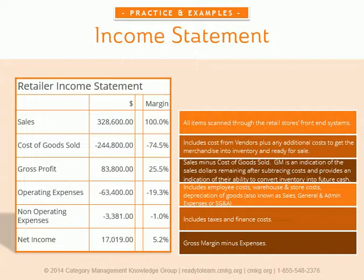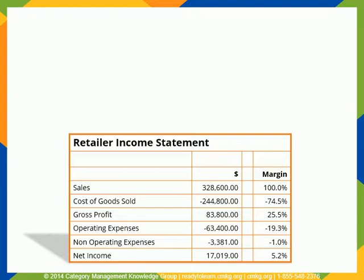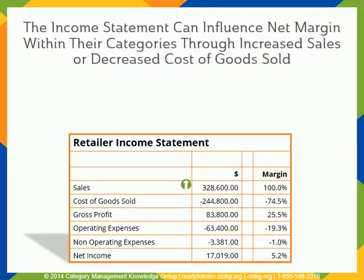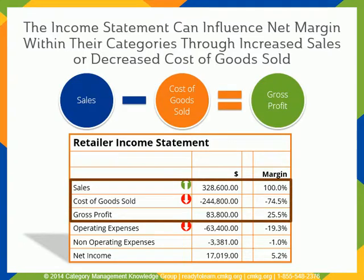And those are the basics of the income statement. When you look at this retailer income statement, think about how the category management team can influence net margin within their categories. They can either increase sales, which is defined as all items scanned through the retail store's front-end system, decrease cost of goods sold, and they have limited influence in decreasing operating expenses. Obviously, category management is not the only department responsible for the results of the income statement.